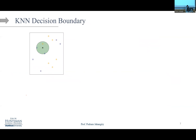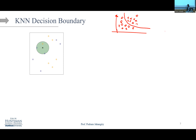Now let's talk about the decision boundary. Recall in logistic regression we had two classes — crosses and circles — and logistic regression drew a linear decision boundary. We're going to do exactly the same with KNN. We want to plot the decision boundary for KNN. In two dimensions you can visualize that because it is non-parametric, the boundary can be literally anything — very flexible.